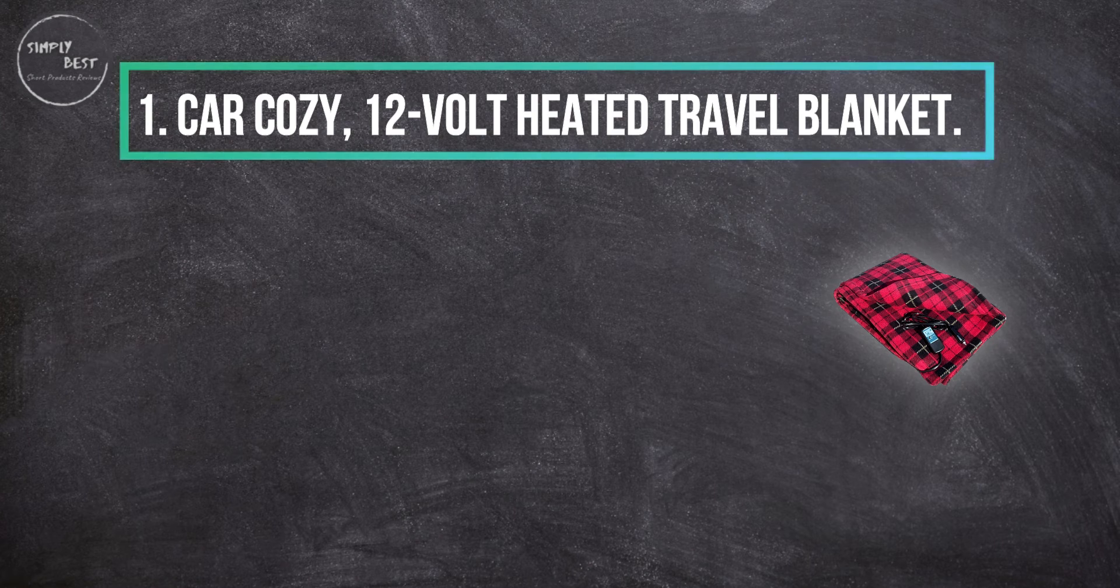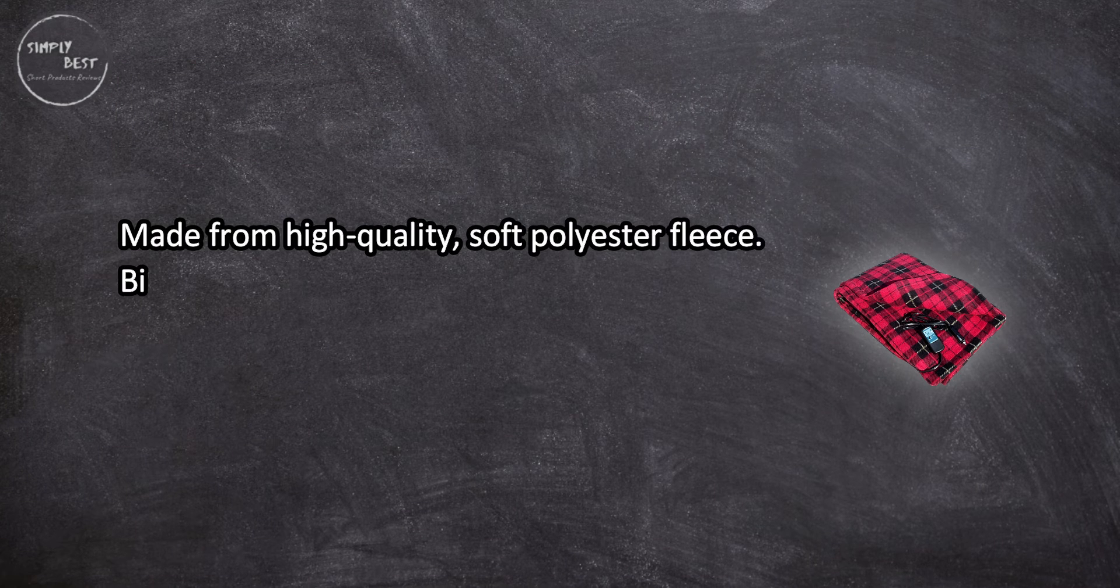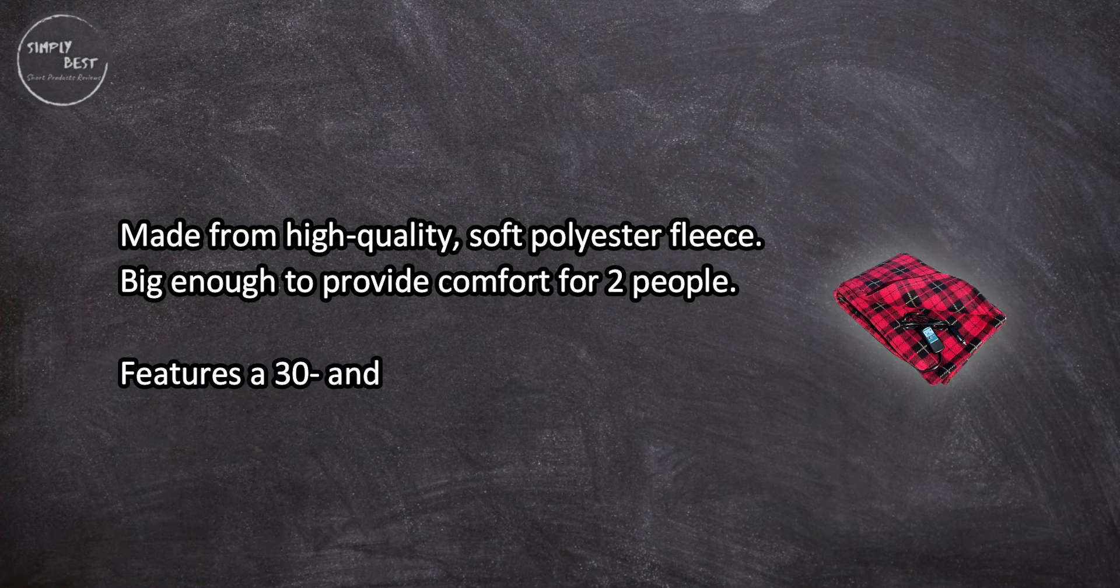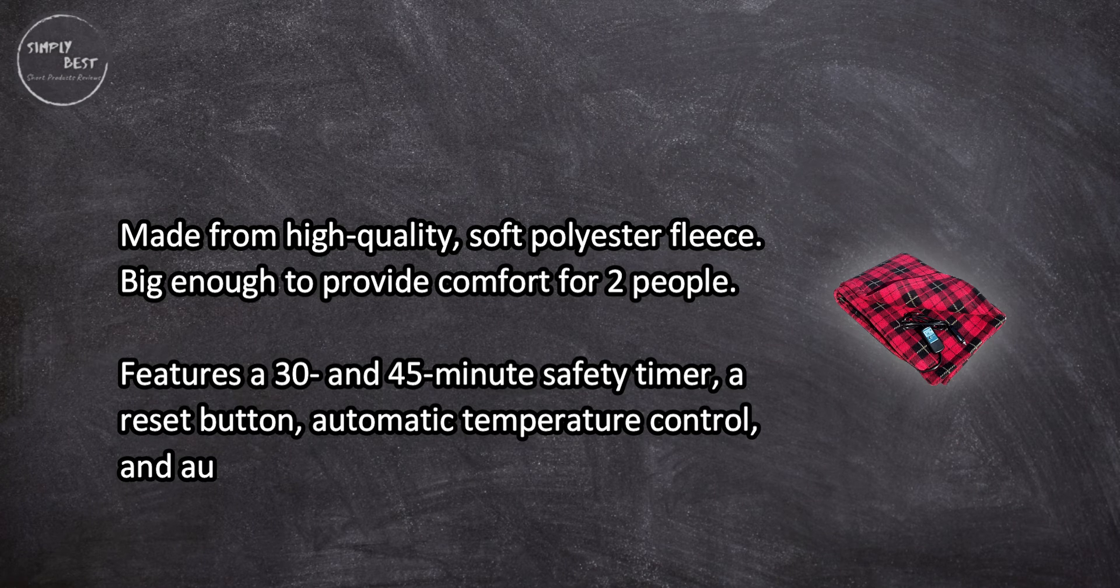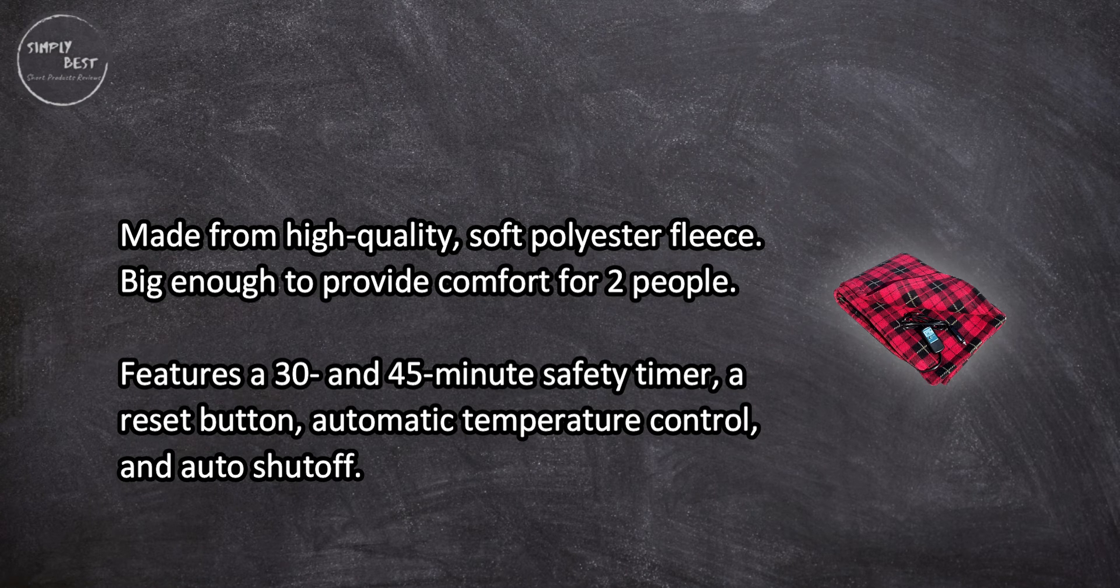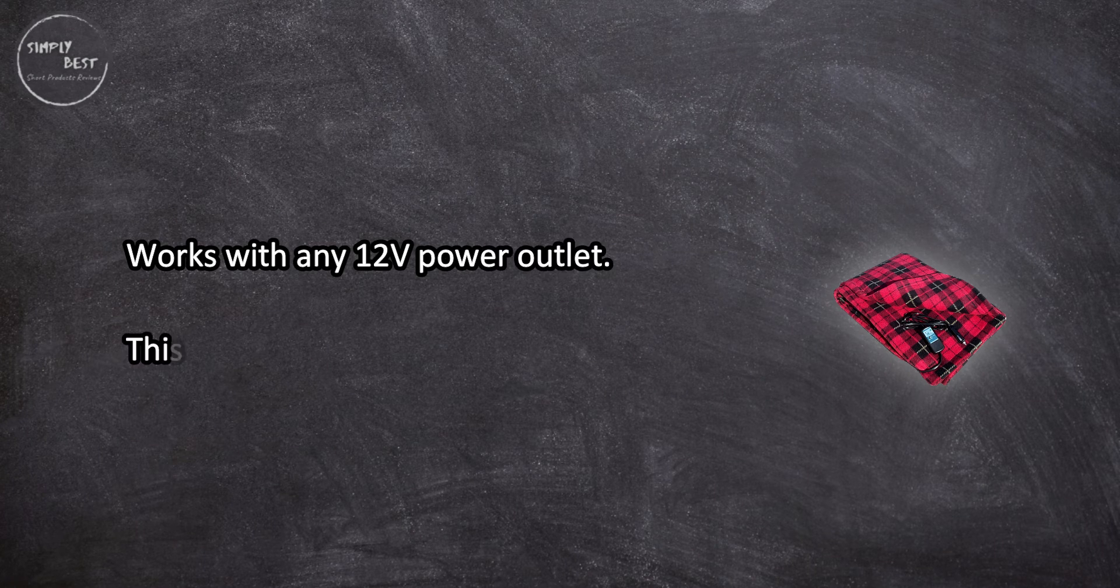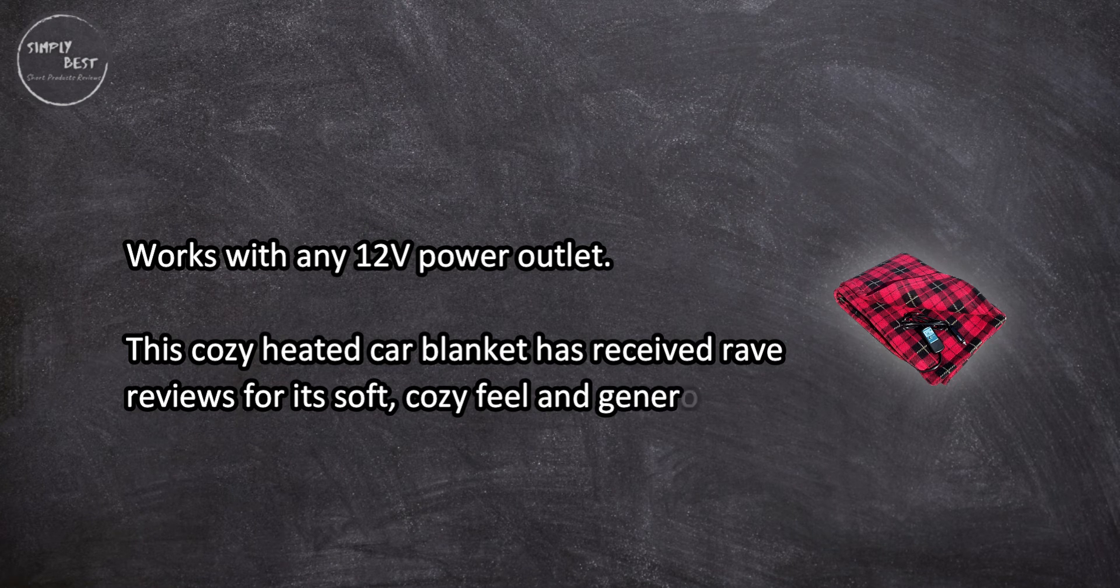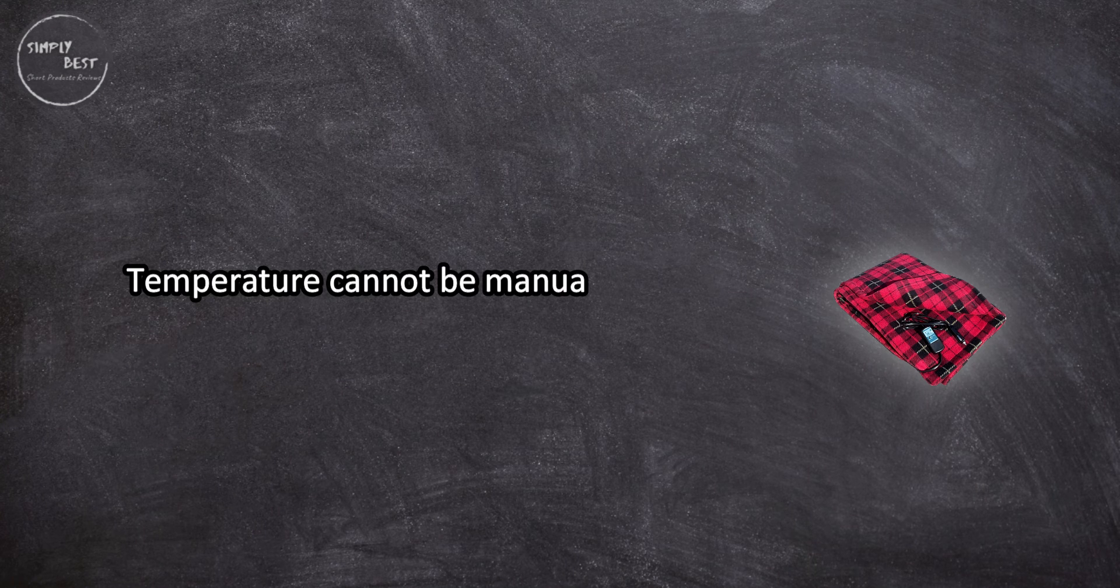Made from high-quality soft polyester fleece, big enough to provide comfort for two people. Features a 30 and 45 minute safety timer, a reset button, automatic temperature control, and auto shut-off. Works with any 12V power outlet. This cozy heated car blanket has received rave reviews for its soft, cozy feel and generous size. Temperature cannot be manually controlled.